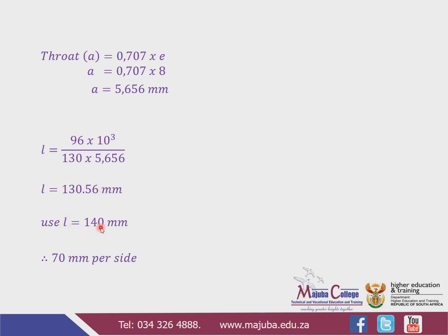Rounding up to the nearest ten gives us 140 millimeters. So the effective length is 140 millimeters. Remember, the effective length of a weld is the total length of the weld, as explained extensively in the previous video on weld connections. Now, if we want to know the length on each side, we divide 140 by 2, which gives us 70 millimeters per side.